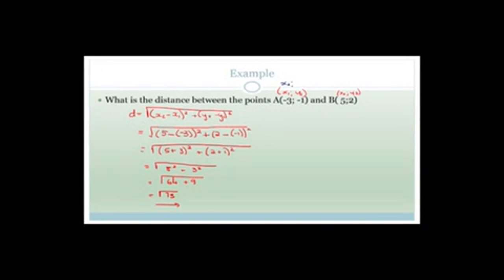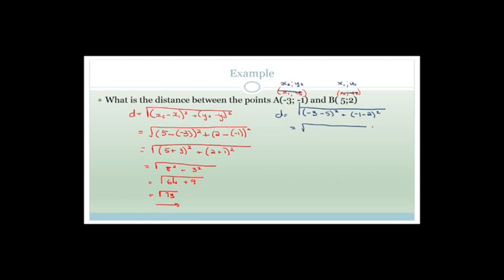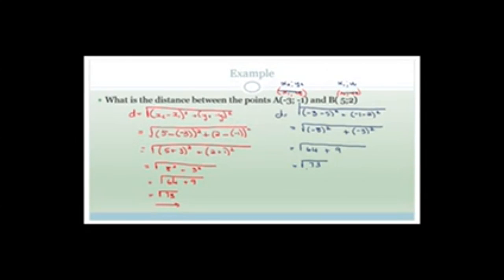Now let me prove to you that it doesn't matter which order you assign x1, y1 and x2, y2. If we swap them - calling A as x2, y2 and B as x1, y1 - we get the square root of (minus 3 minus 5) squared plus (minus 1 minus 2) squared. That's (minus 8) squared plus (minus 3) squared, which is the square root of 64 plus 9, which is the square root of 73. It really doesn't matter which way we go.